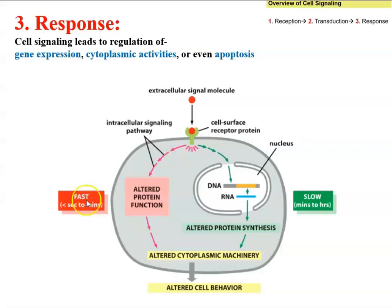Comparing cytoplasmic activities with gene expression, gene expression involves the actual synthesis of protein. Not only do we have to initiate the phosphorylation cascade and turn on the target protein — which is a transcription factor — but then the gene needs to be located within the DNA, transcription must occur to make mRNA, mRNA must be translated into protein, and finally the protein must be folded to be functional. For this reason, gene expression is generally slower: minutes to hours until the altered cell behavior is observed.